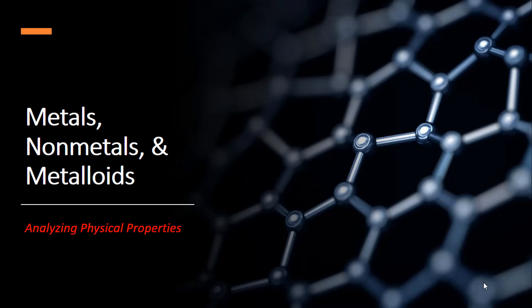In this video, we're going to be focusing on three areas of the periodic table. We're going to specifically be looking at three different categories of elements which chemists call metals, nonmetals, and metalloids.